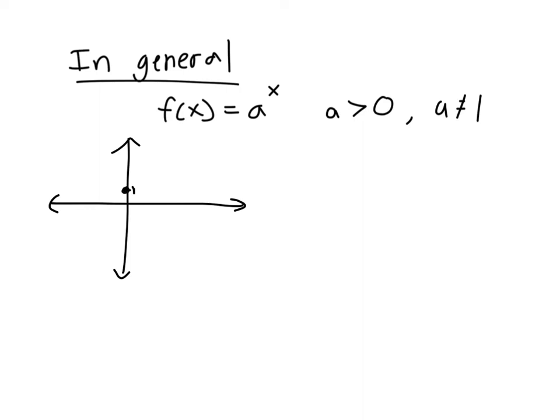And then if a is greater than 1, so such as 3, which was in our previous example, we had a equal to 3 for f(x), then the graph will have this sort of shape. So you see that there is a horizontal asymptote at x equals 0.